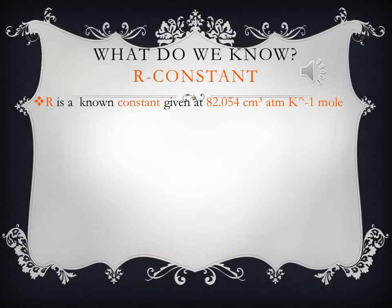So what exactly is this R-constant thing? It's going to be given to you by your professor or TA. It's a known value and there are a couple different ones. The one we're going to be using is 82.054. Notice that's in terms of centimeters cubed. That's going to be really important when we're canceling our terms.